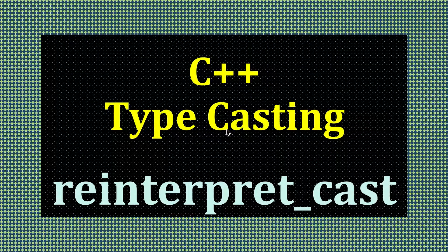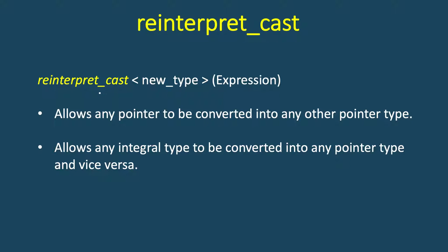In this video we will study about reinterpret_cast in C++ and we will see how it is different from other types of casts and when we should use it. Its syntax is the same as other type casts — we need to provide the new type and then the expression. Reinterpret_cast allows any pointer to be converted into any other pointer, with one exception: we cannot convert a const pointer to a non-const pointer. It also allows conversion between integer types and any pointer type, and vice versa.